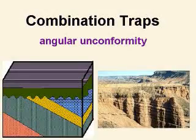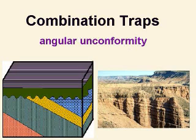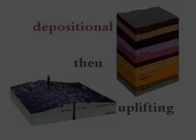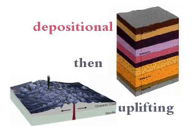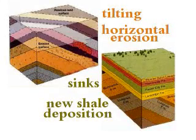In this picture, we have combination traps, commonly known as angular unconformity traps, which are composed of rock formations created from both deformation and deposition. First, there is deposition, then lithification into rock. Next, it is uplifted above sea level. Then it is tilted from earthquakes or plate movements.